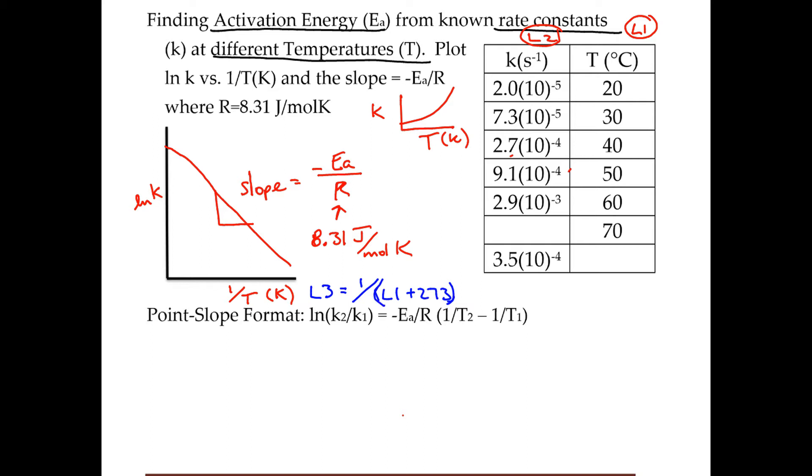Then your list 4 is going to be your new y, and that's going to equal the ln of list 2. And then when you graph that, you're going to get this graph.